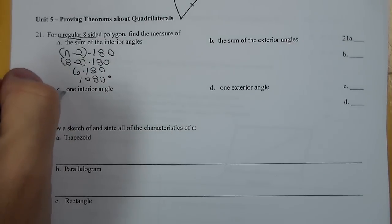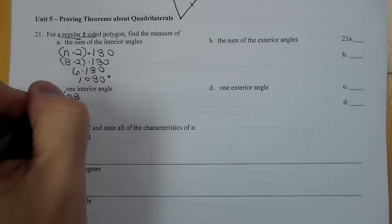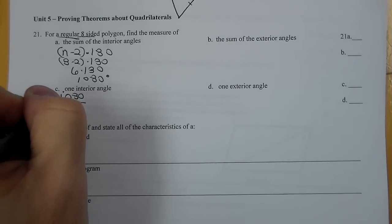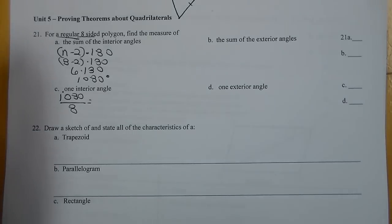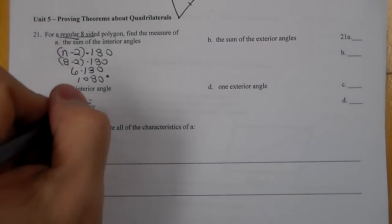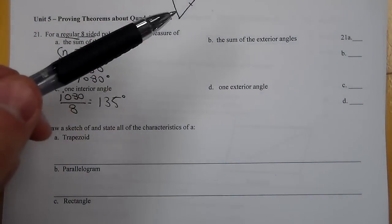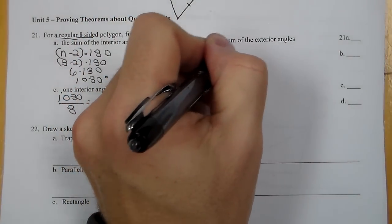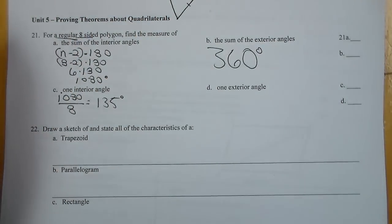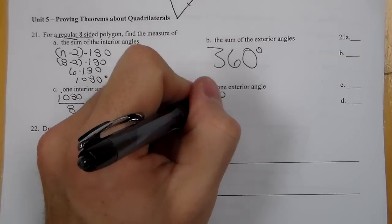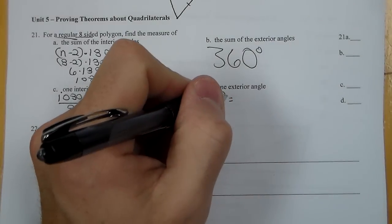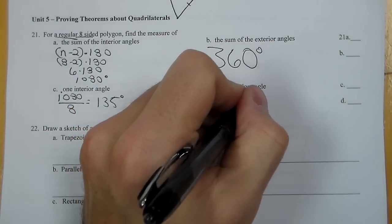Now one interior angle is going to be 1080 divided by how many angles we have, because that's the total and we know it's equal pieces, so that divided by 8 is 135 degrees. Now we go over to B, and it's asking for the sum of the exterior. The sum of the exterior is always 360, regardless of the number of sides. Now one exterior is going to be 360 divided by the number of sides or number of angles, which is 8, which gives us 45 degrees.